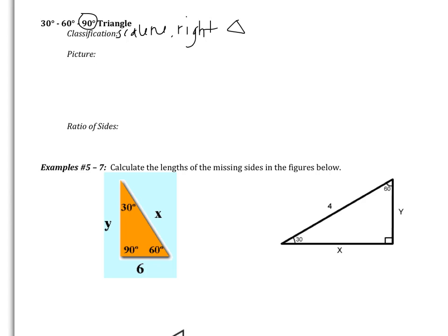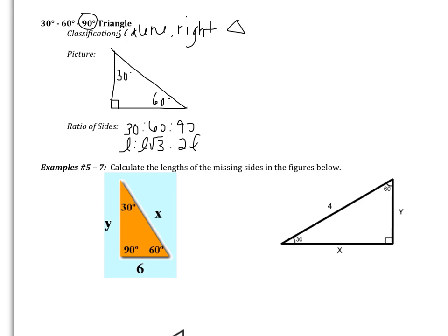In terms of a picture: a right angle, 30 degrees, 60 degrees — all sides are different. The ratio is a little trickier since no sides are congruent. The angles are 30-60-90. Across from the 30 we call L; across from the 60 is L√3; across from the 90 is 2L. So on our picture: across from the 30 is L, across from the 60 is L√3, and across from the 90 is 2L.